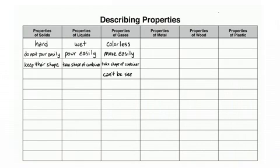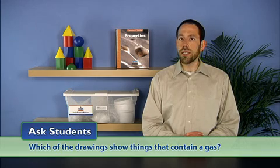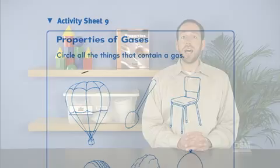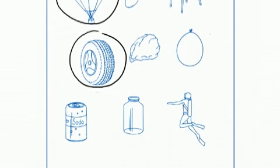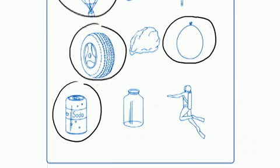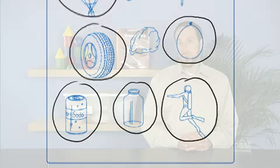Finally, distribute a copy of Activity Sheet 9 to each student and ask: which of the drawings show things that contain a gas? Students should respond that the hot air balloon, the tire, the balloon, the can of soda, the empty jar, and the scuba diver's tank all contain gases.